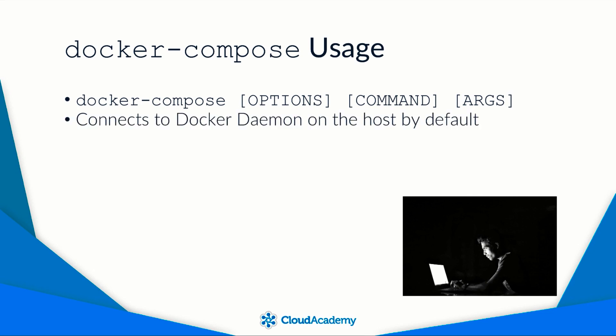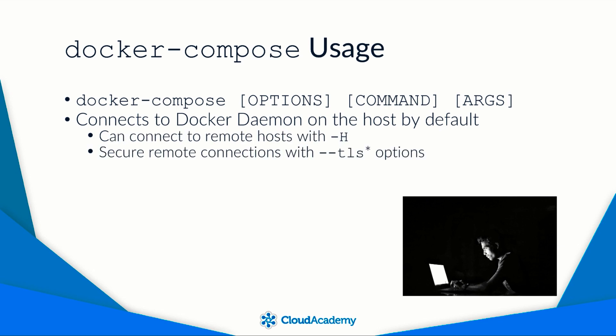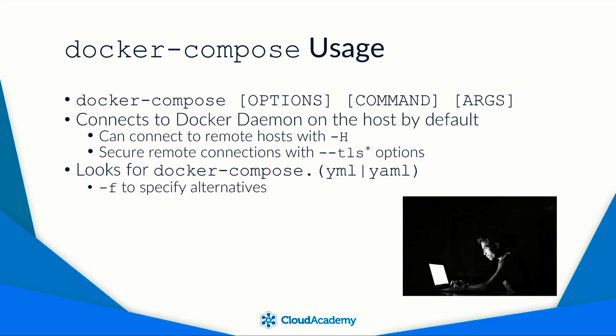Compose will use the Docker daemon running on the host by default. You can connect to a Docker daemon running on a remote host using the -H option, and secure that connection using transport-level security, which requires the remote host to be configured for TLS. For commands that reference a Compose file, the CLI looks for docker-compose.yml or docker-compose.yaml in the current directory by default. The -f option lets you specify a path to any file you want Compose to use.